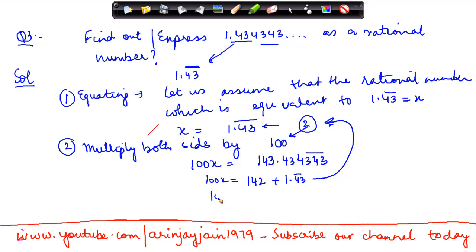So 100x equals 142 plus x, which implies that 100x minus x equals 142, or 99x equals 142, which means that x equals 142 divided by 99.